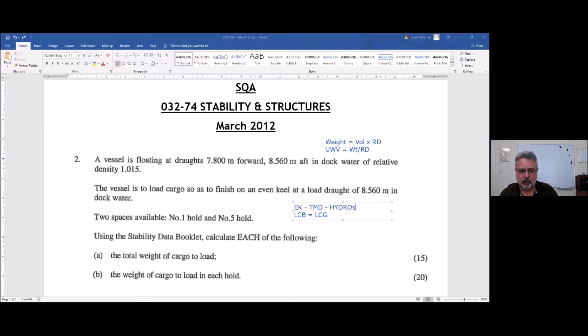Two spaces available, number one hold, number five hold. Calm down, don't panic. It's just practice. It's a past paper question. Just a little bit of algebra, and we're only using one X. Using stability data booklet, calculate each of the following. Fifteen marks, total weight of cargo to load.